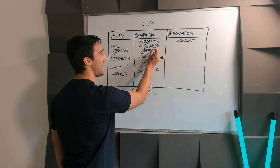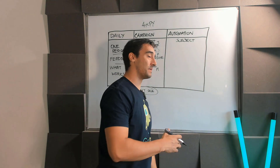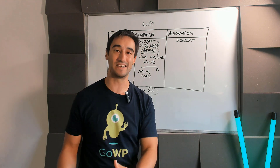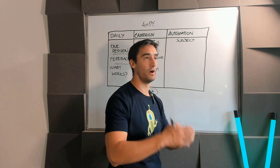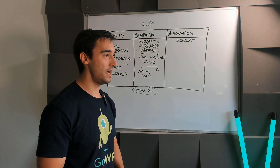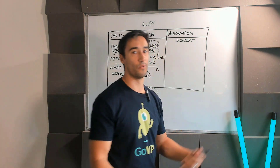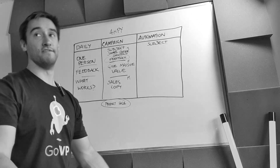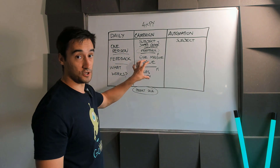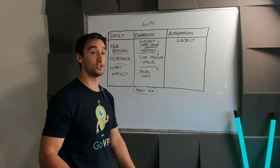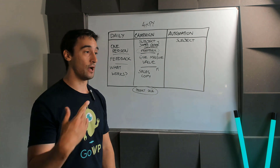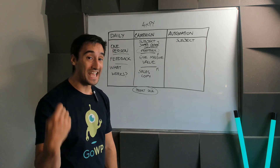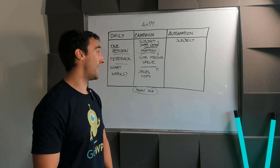After gathering feedback, you move forward into giving massive value. If people say they're working on saving money or lead generation, the next month you focus entirely on giving massive value around that topic. The more value you give up front, the easier it is to start making sales. Then in the third month, you sell heavily — tell people where they can buy, share testimonials and case studies, give calls to action.